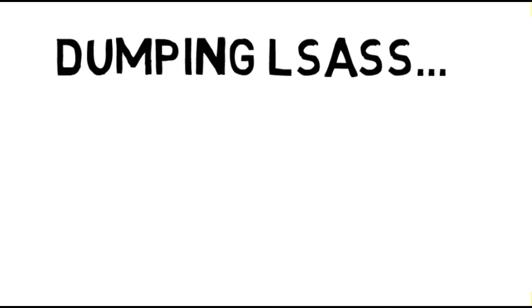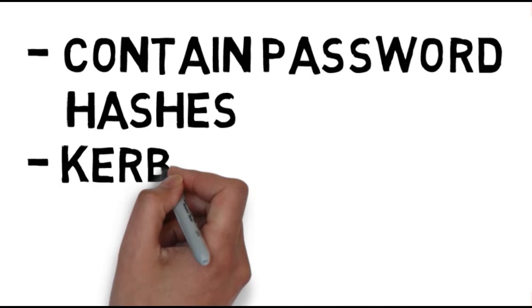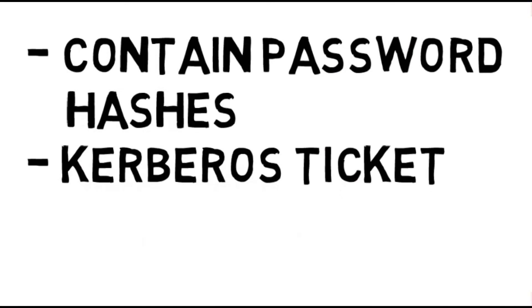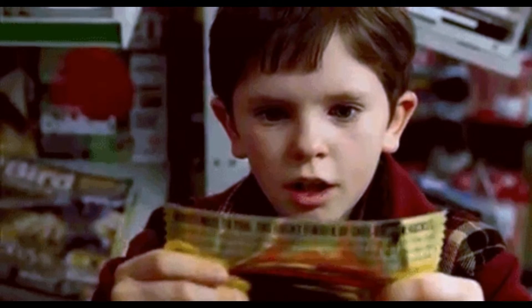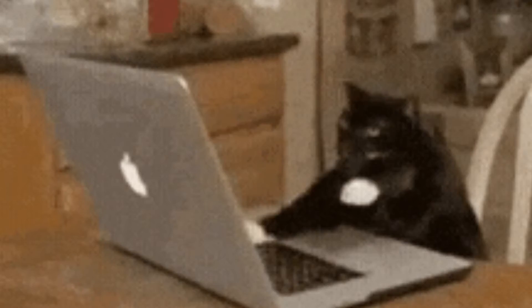What we want to do is dump LSASS. But why? Because it basically stores user password hashes, Kerberos tickets, Kerberos TGT, and NTLM hashes, which are important for creating a golden ticket — something we talked about in the last video. Being able to dump this process memory will be very useful for persistence. Now let's cut the talking and start coding.